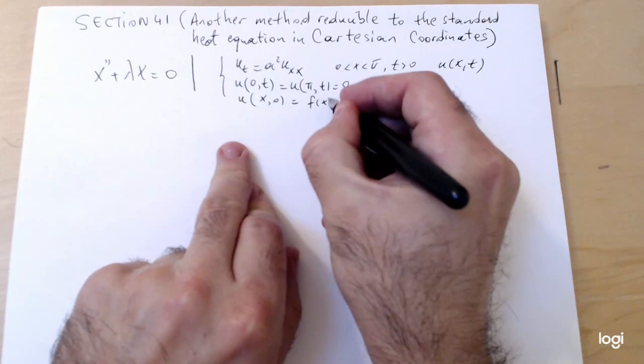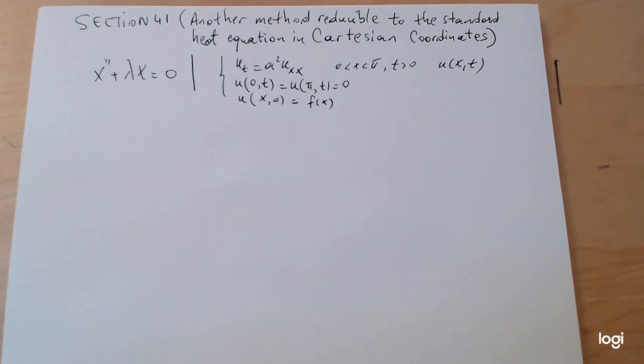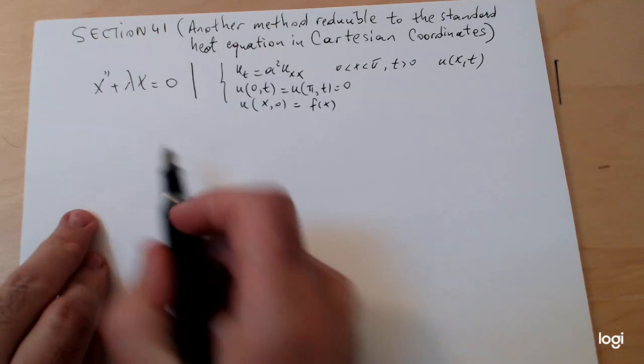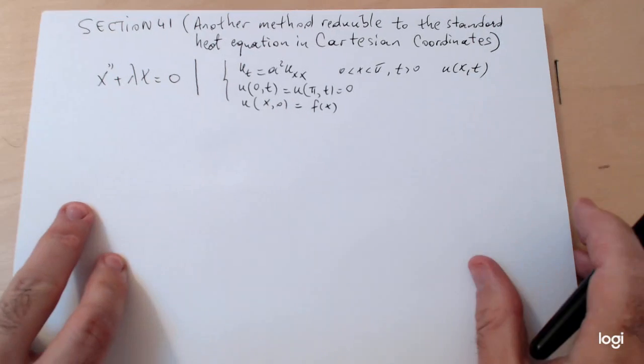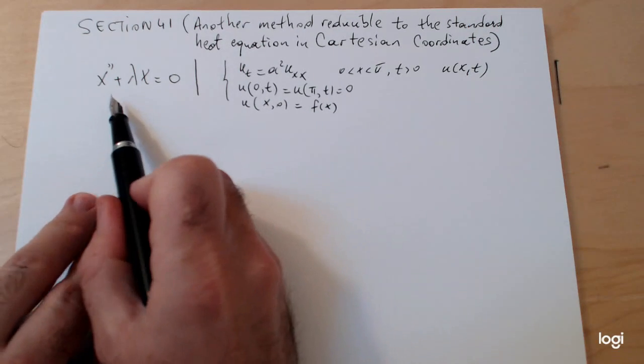And some initial temperature which is, let's keep it unspecified at this point, so u(x,0) equals some function of x. Remember you deal with that non-homogeneous condition at the end after you do the superposition principle.